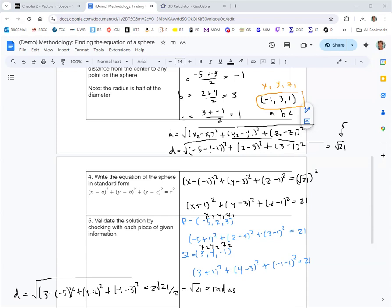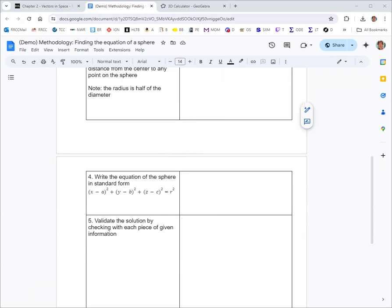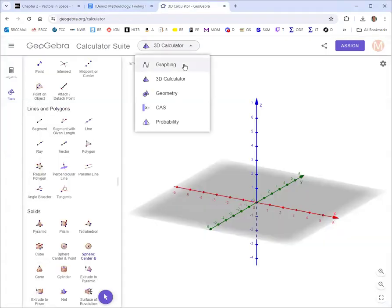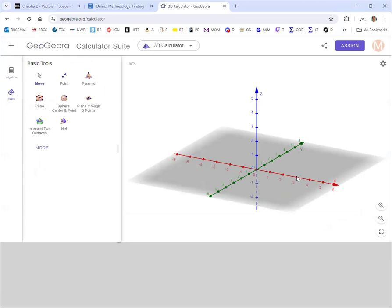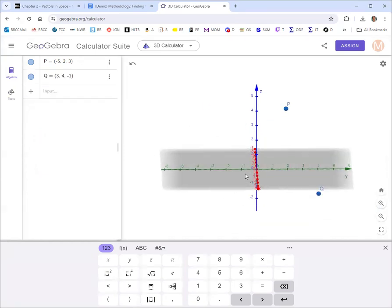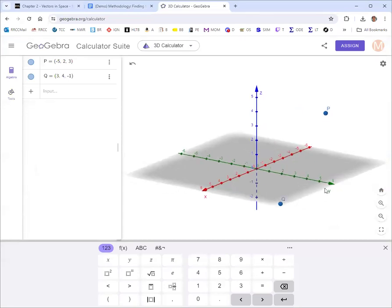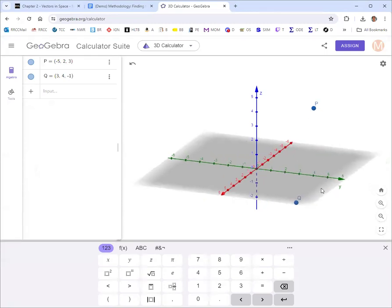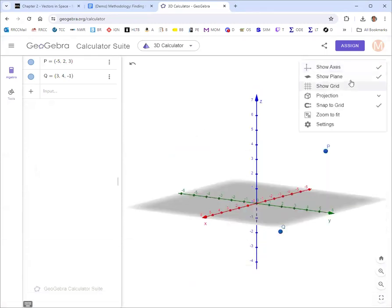You can also use GeoGebra to validate this. You'll want to go to the 3D calculator, so just toggle this to 3D calculator. You can put in points the same way: capital letter and then in parentheses put the coordinates. So there's P and Q. You can kind of move this so the x is red, y is green, and z is blue. That looks more like our drawing. If you don't like the xy plane being shaded, you can get rid of that too.